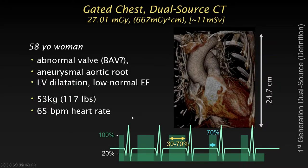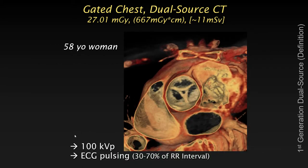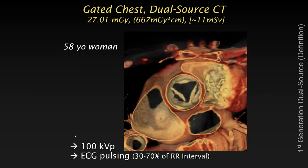Usually what we do is shown in this cartoon of dose modulation relative to the R-R interval. For a gated chest, we expose at full dose between 30 to 70% of the R-R interval, but down-modulate to 20%. We usually do not down-modulate all the way to 4% as in a MINDOSE protocol. So we reduce only to 20%, not less than that, which still results in quite remarkable images.